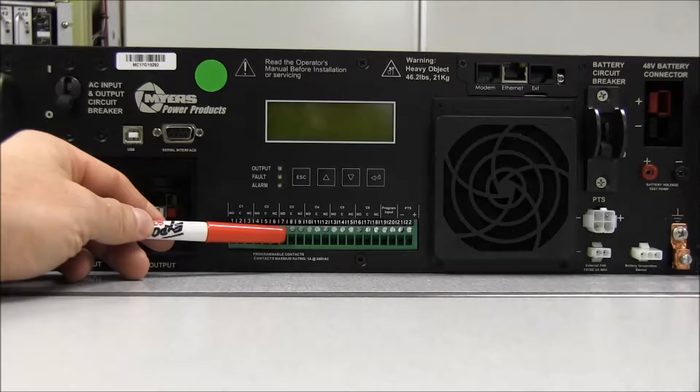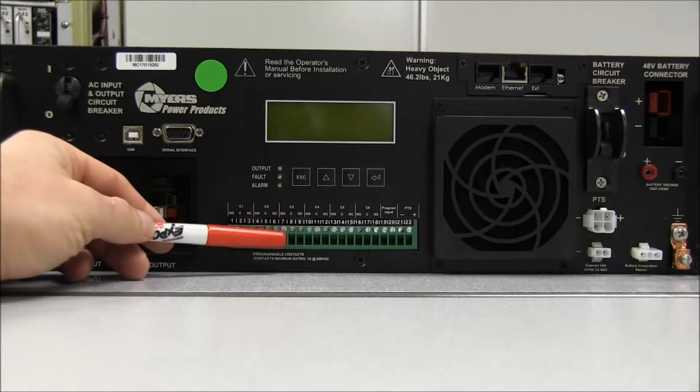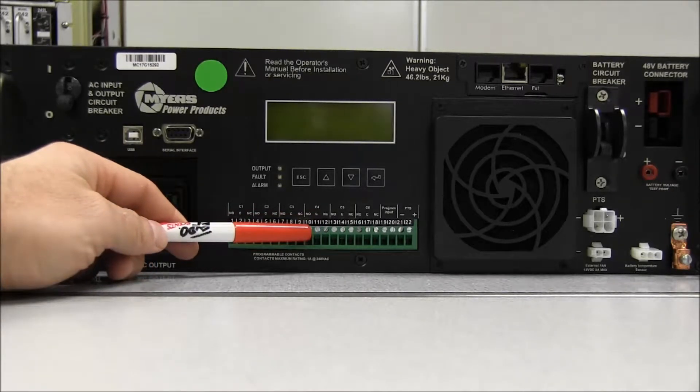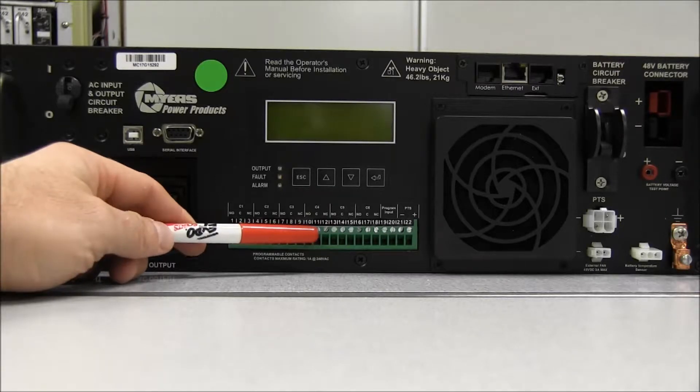So we would have our 242 card jumper to slots 7 and 8 here at C3. We would do the same thing at C4 at screws 10 and 11.